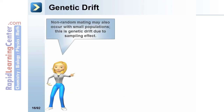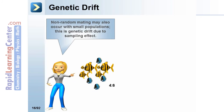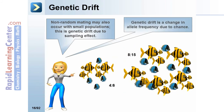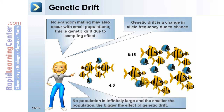Non-random mating may also occur with small populations — this is genetic drift due to the sampling effect. Genetic drift is a change in allele frequency due to chance. No population is infinitely large, and the smaller the population, the bigger the effect of genetic drift.